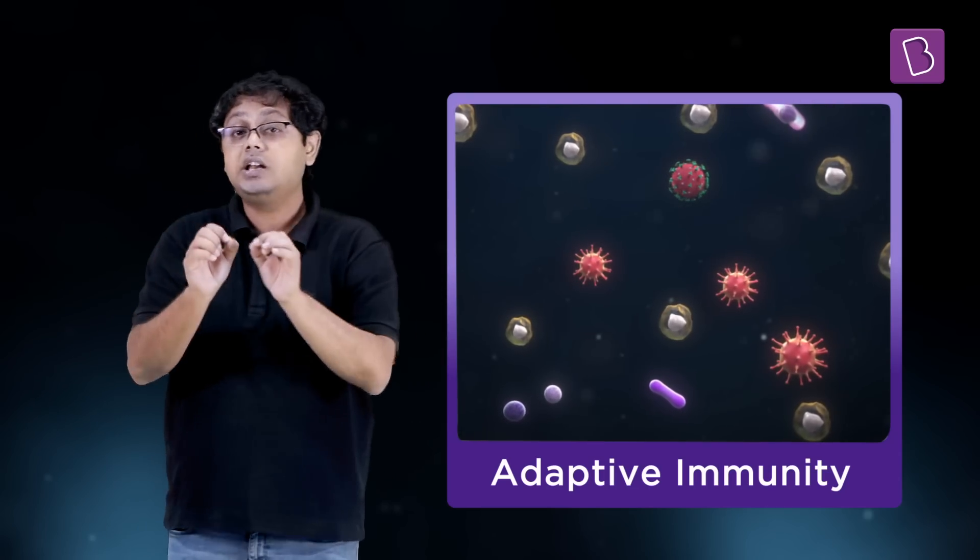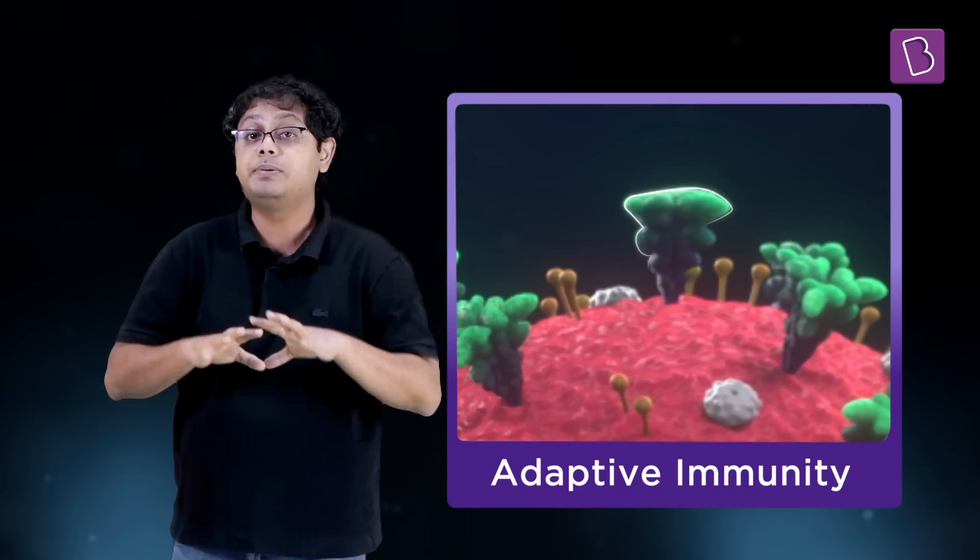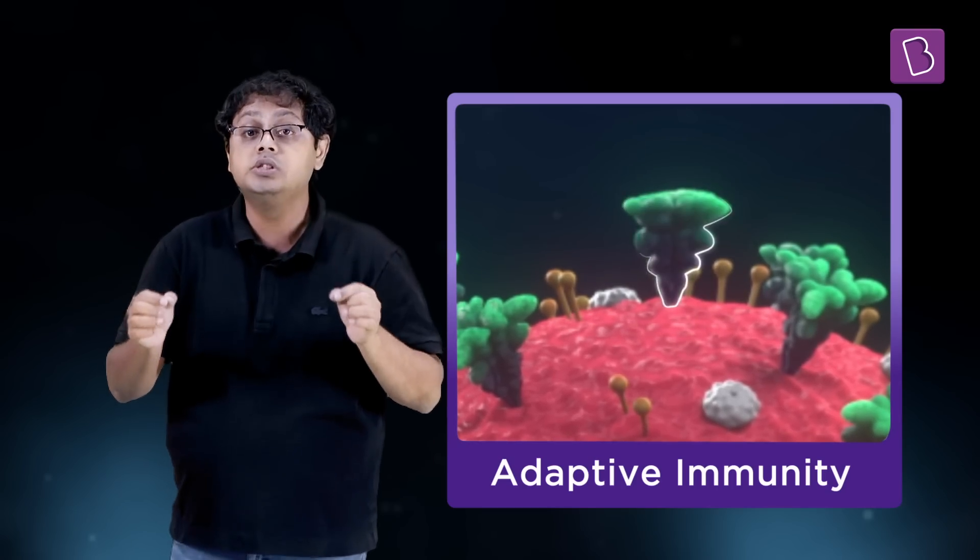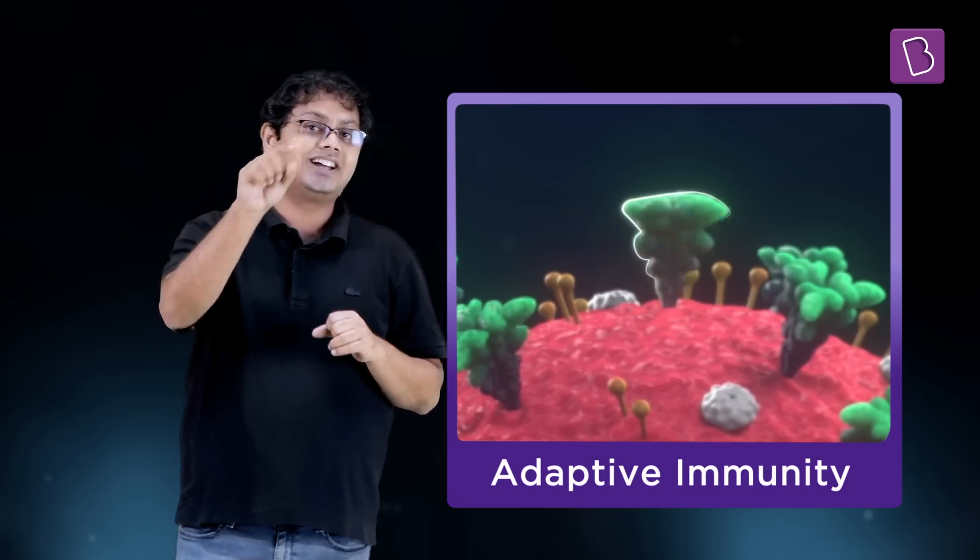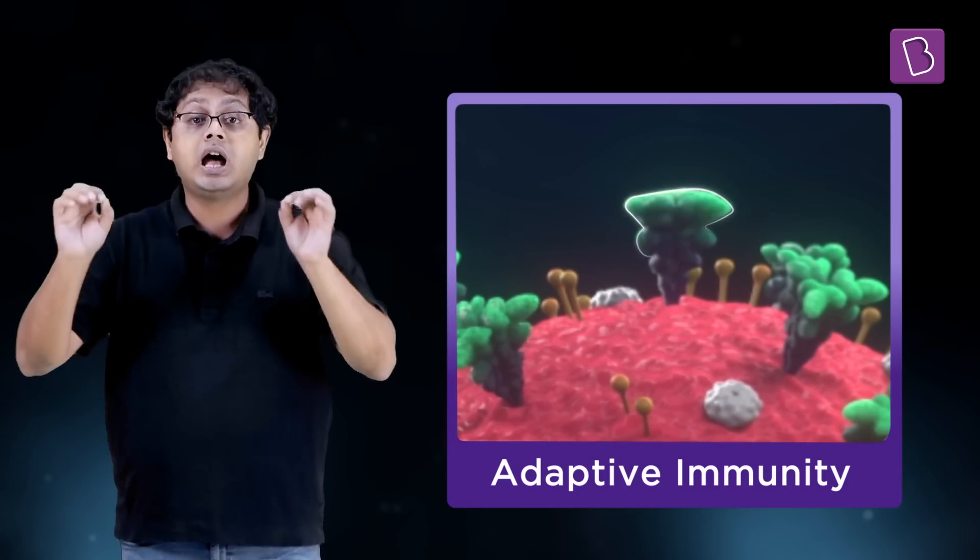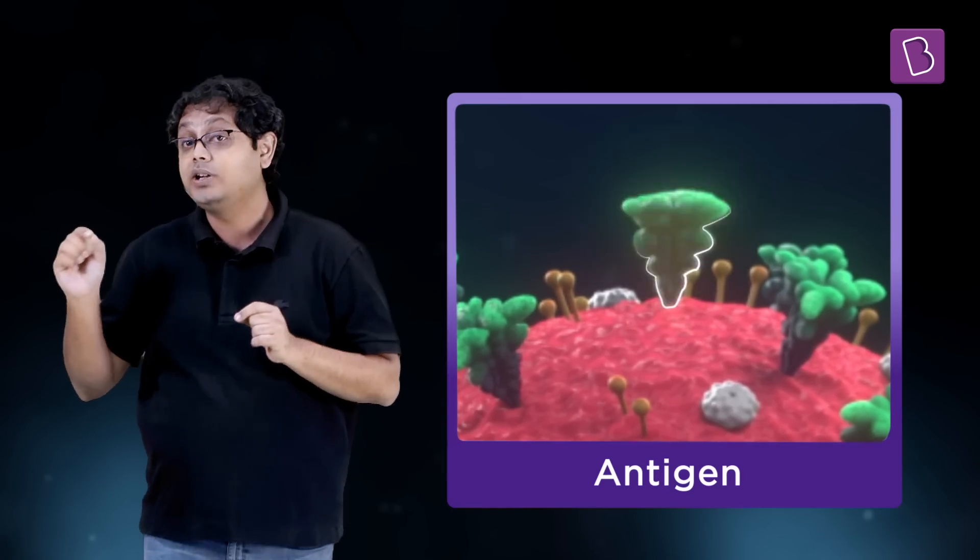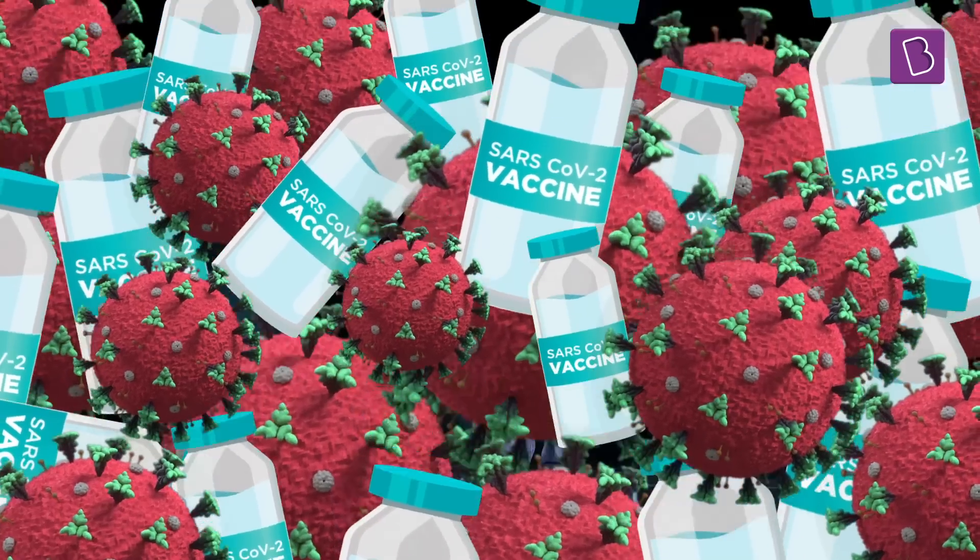This is done by identifying certain specific molecules such as proteins or glycolipids on the pathogen. These specific identifier molecules are called by a special name. And there is a high chance that you would have heard this name as well. It's called antigen. In case of the coronavirus, the spike protein that we spoke about is what gives away its identity. As soon as this antigen is discovered, the adaptive immunity or the adaptive immune system actually gets all riled up.